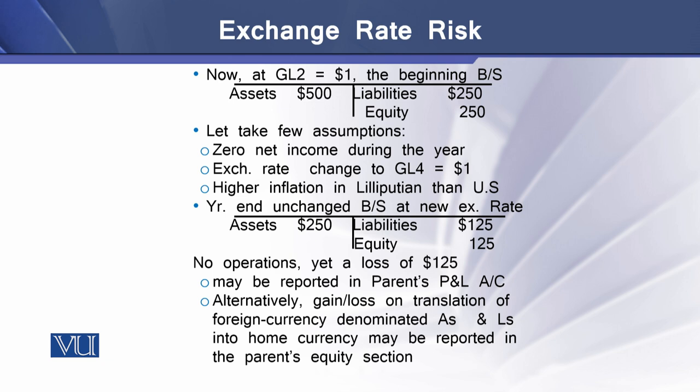At the end of the year, the opening GL-denominated values are converted into dollar-denominated values at the new exchange rate of 4 GL per 1 US dollar. Now assets equal $250 US dollars, while the corresponding values of liabilities and equity are $125 dollars each. There is a significant difference between the opening and closing dollar-denominated balance sheet values.